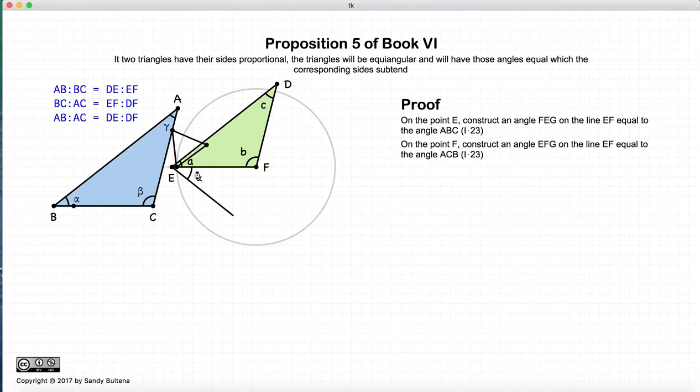And again, we're going to do the same kind of thing, but on point F, we're going to construct an angle such that it is equal to this angle BCA. So alpha, beta, alpha, and beta.